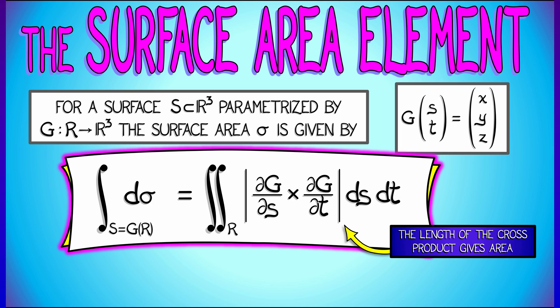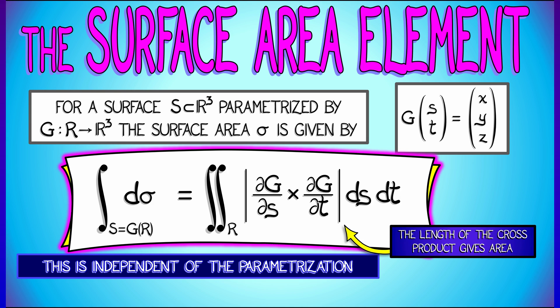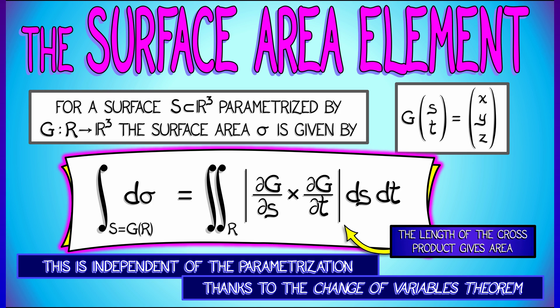If we integrate that length over the parameter plane with respect to the area element there, ds dt, then we get the surface area. And the wonderful thing is, thanks to the change of variables theorem, this is independent of how you parametrized the surface.